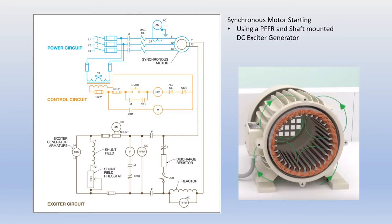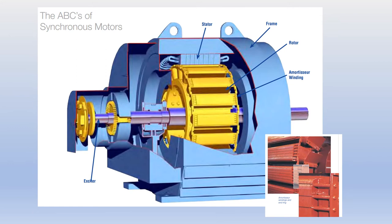Please note: when a DC exciter generator is used to provide the DC for the rotor's magnetic field, one has to consider that when the motor's AC power is initially applied, the shaft is at a standstill and the DC generator is not providing any DC power from its output. When the start button is pressed, the CR1 control relay will become energized and all contacts associated with it will change state. This will energize motor starter M, and its associated contacts will close, providing three-phase power to the stator coils of the motor.